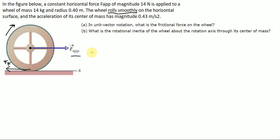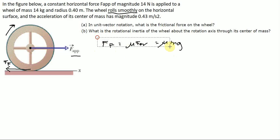We're given the mass, the radius, and the acceleration, and we're told to find the force of friction. Well, if we had the coefficient of friction we'd be able to use f_f = μ·f_n, which would equal μ·mg, but we're not given that. So we're not going to be able to use that — we have to be creative. What we're going to do is use f_net according to Newton's second law.